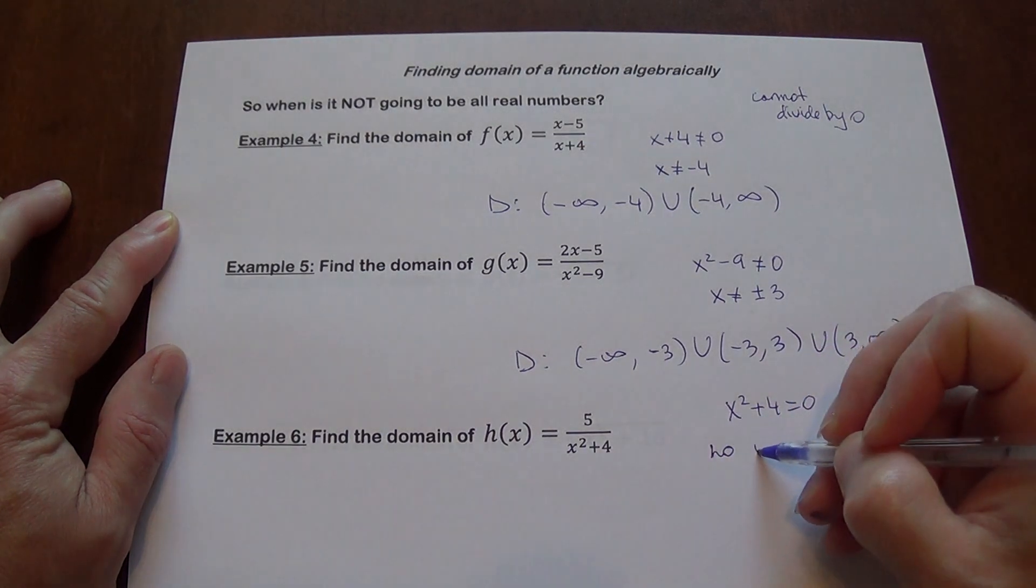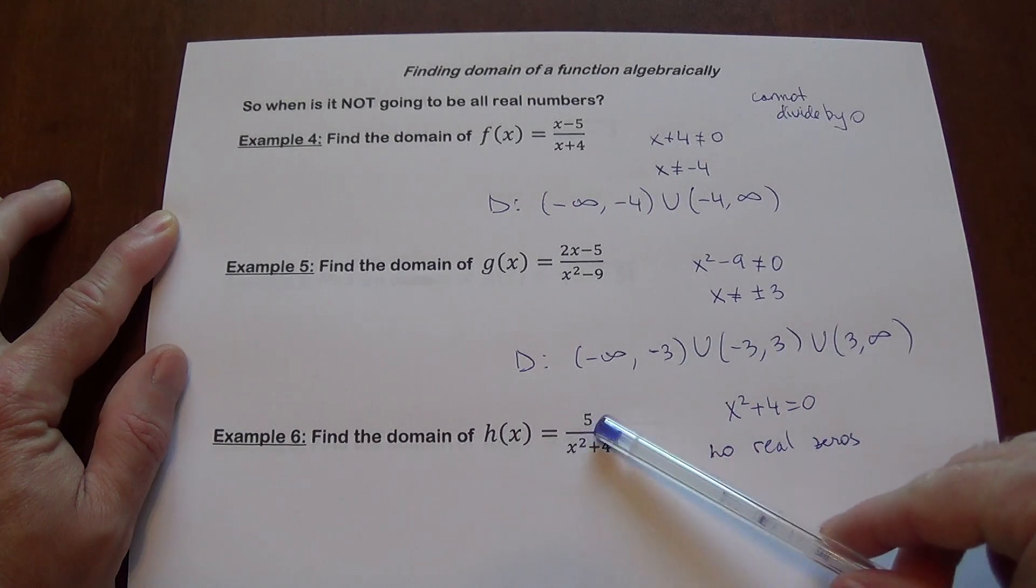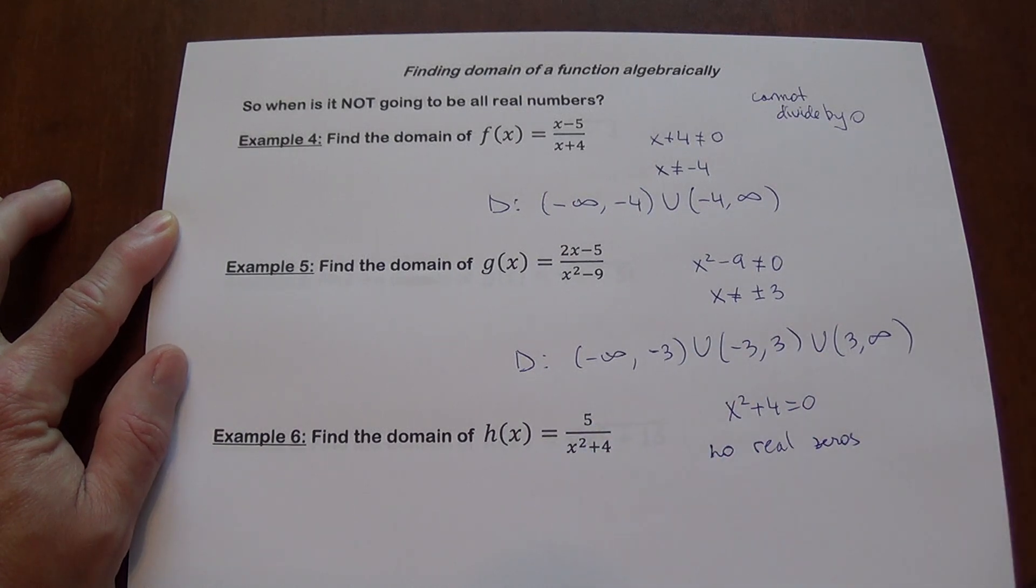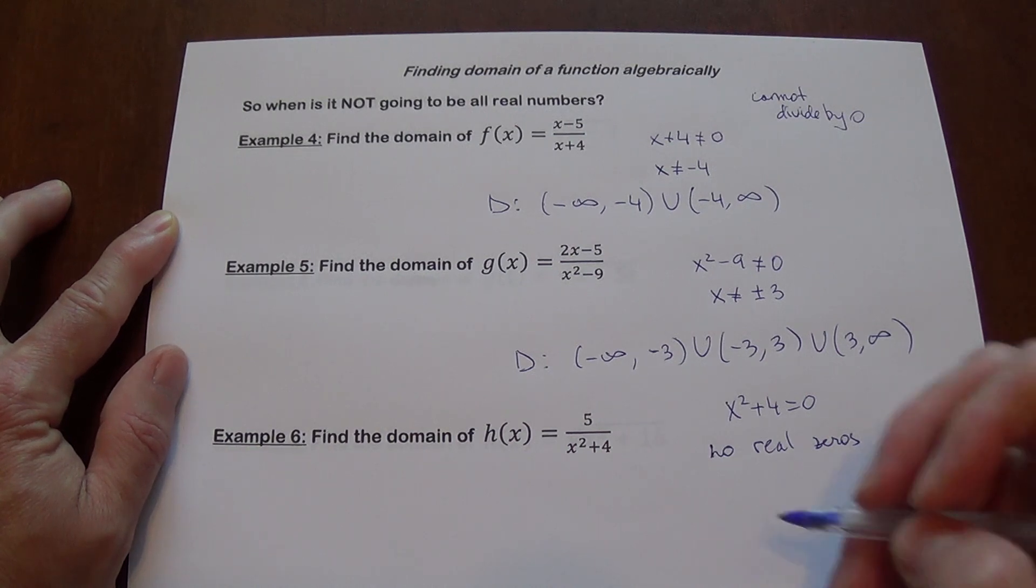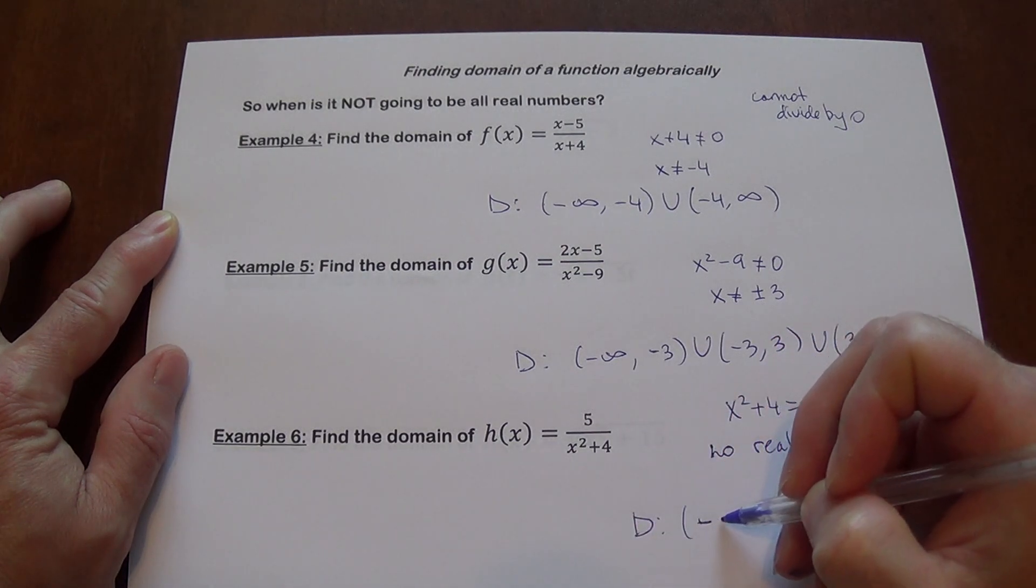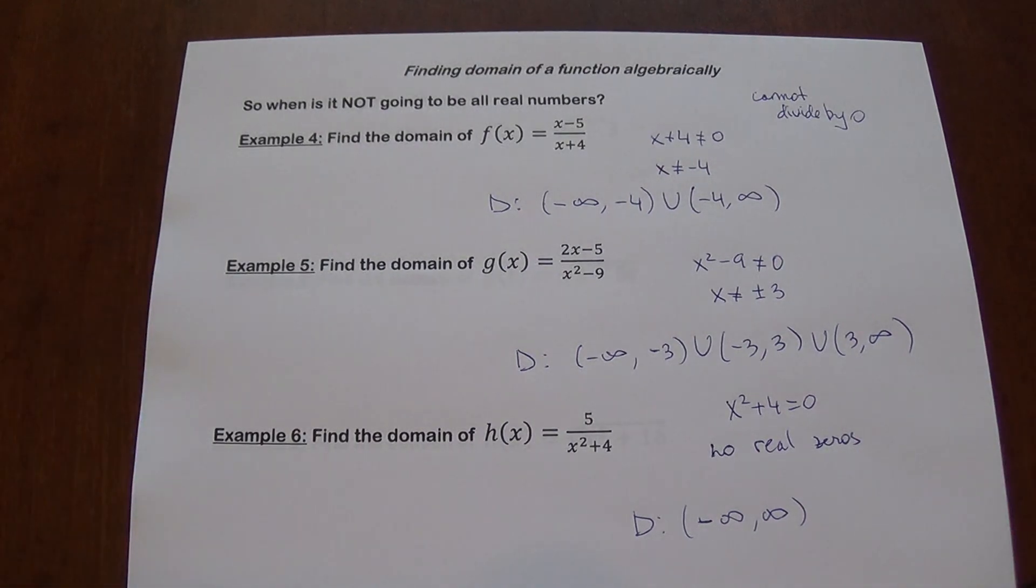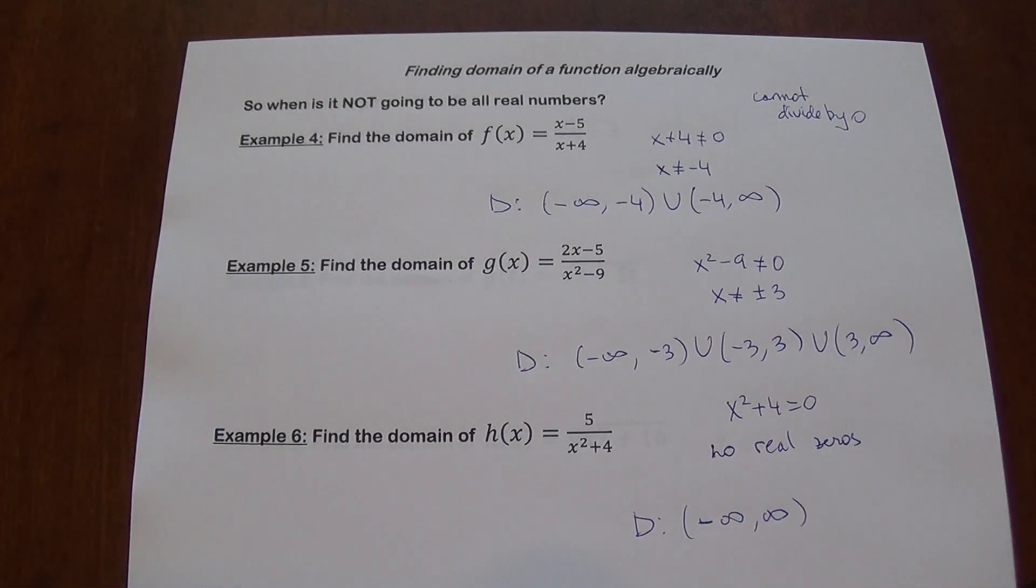So no real zeros. And that means that even though we divide and there is x on the bottom, you do not have any problems because you cannot make x squared plus 4 equal zero with any real value of x. So the domain here is going to be all real numbers. It's a very common mistake. Sometimes students become very creative and come up with some crazy ideas. That's not true in this case. There's no real number that's going to make it zero.